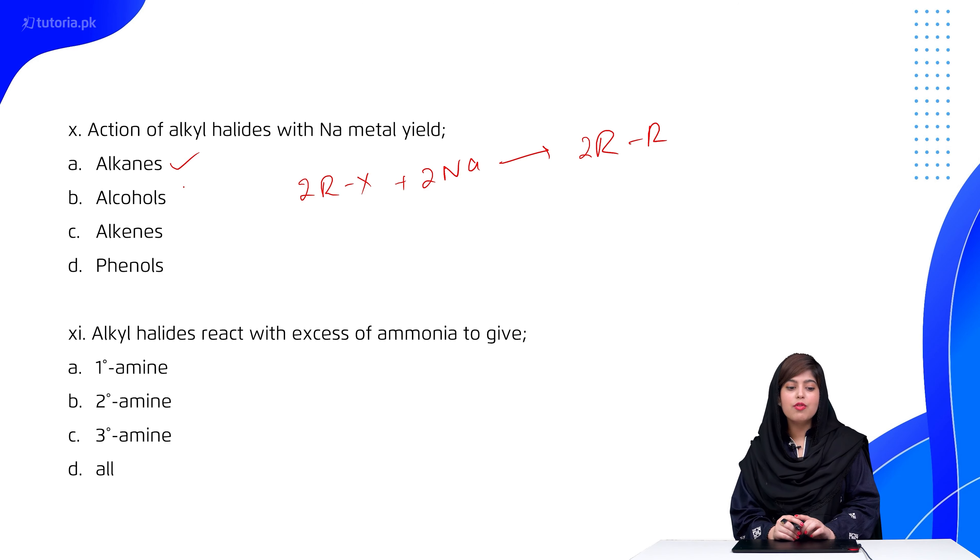Then students, alkyl halide reacts with excess of ammonia to give primary amine, secondary amine, or tertiary amine. So students, remember that with excess of ammonia, we have already studied that different amines are produced. So this will be all of these.